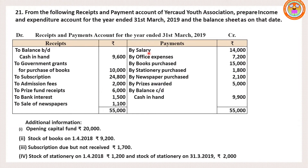Moving on to payments: salary is a revenue transaction — debit side. Office expenses is a revenue transaction — debit side. Books purchased is an asset; it is not recurring in nature, it is a capital transaction, so it need not be recorded in income and expenditure account. For stationery purchased, look at the additional information — is there any opening stationery? Yes, opening stationery is given. The formula is: opening stationery plus purchases minus closing stationery.